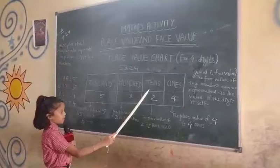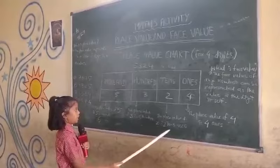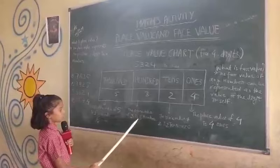In the 10's place, the place value of 2 is 20. In the 100's place, the place value of 3 is 300. In the 1000's place, the place value of 5 is 5,000.